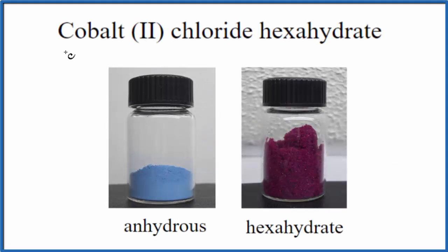In this video, we'll write the formula for cobalt chloride hexahydrate. So we have cobalt chloride and the hexahydrate. That means we have six water molecules around the cobalt chloride.